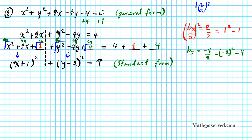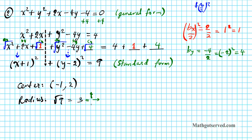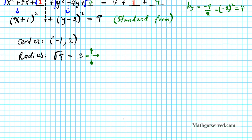With standard form, we can easily determine the properties. The center is the opposite of the number next to each variable: the x-coordinate is negative 1 (opposite of positive 1) and the k is positive 2 (opposite of negative 2). The radius is the square root of 9, which is 3. We go 3 units in all directions from this center. The center at (negative 1, 2) means we go left 1 and up 2, placing us in quadrant 2.